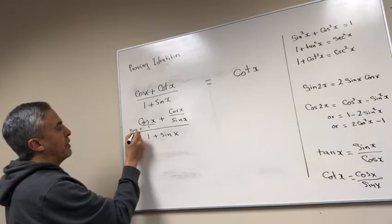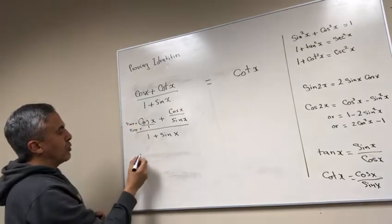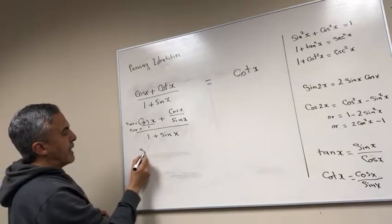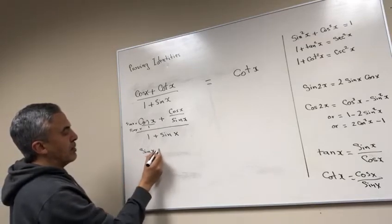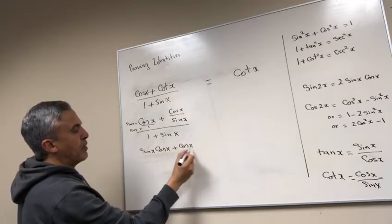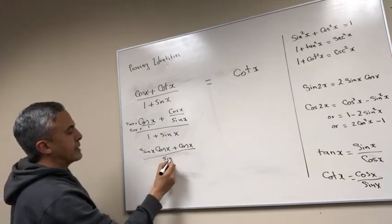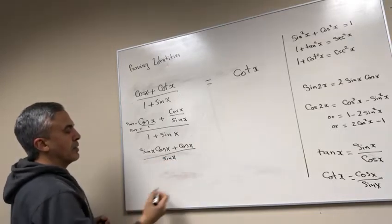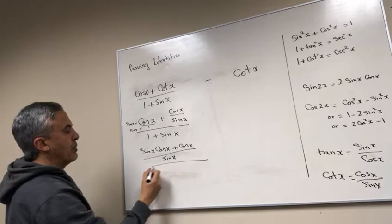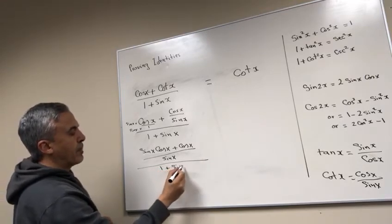And whatever I do to the bottom I do to the top, so it will give me sine X cos X plus cos X all over sine X, and then this would be over 1 plus sine X.